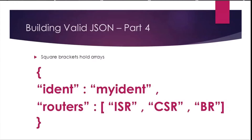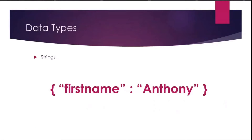Let's run through the data types and what they look like in JSON. We already covered the array — square brackets with multiple entries. Here's a string: the big thing about strings is we use quotes around the value.